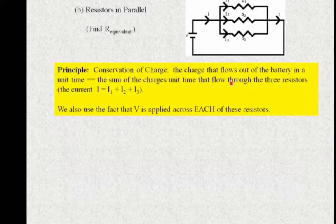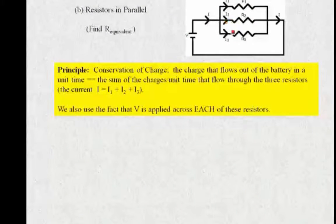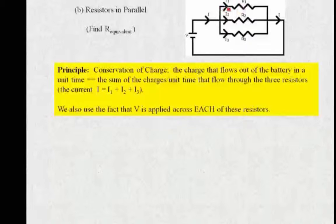What about resistors in parallel? Here we have these just three resistors shown here. And the principle that we use here is the conservation of charge. The charge that flows out of the battery, so that's right here, and if you want to call it per unit time, that would give you the current, is equal to the sum of the charges, again per unit time, flowing through each of these resistors.